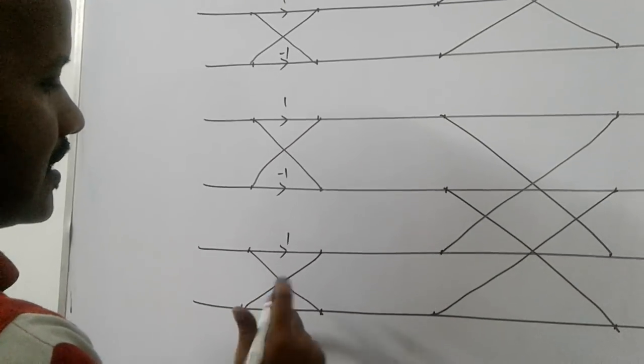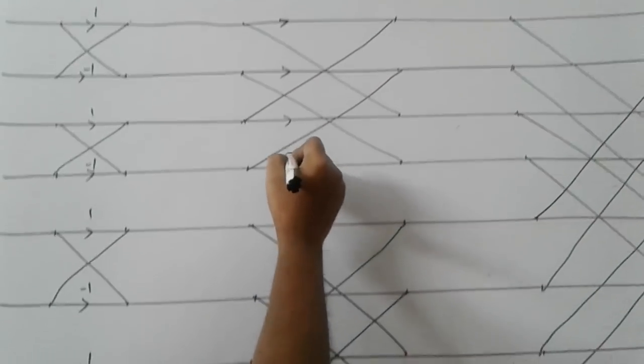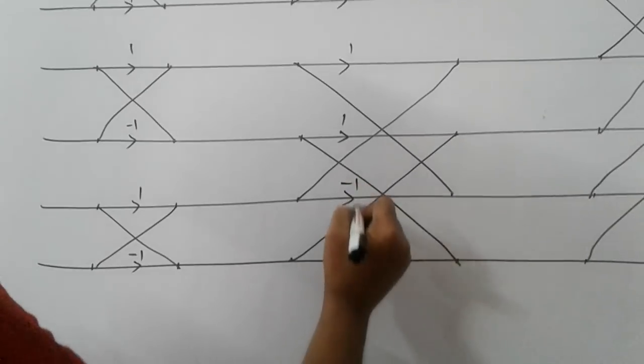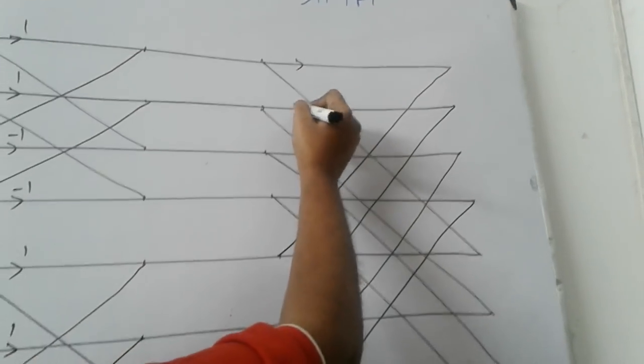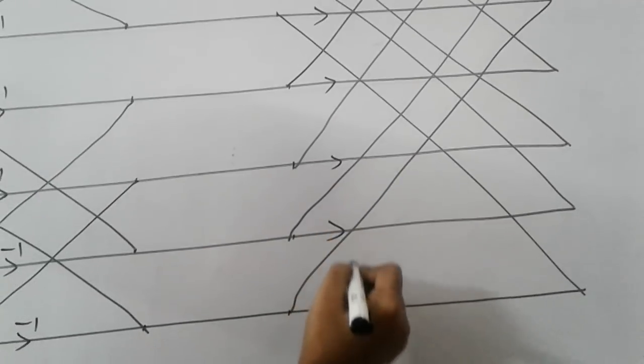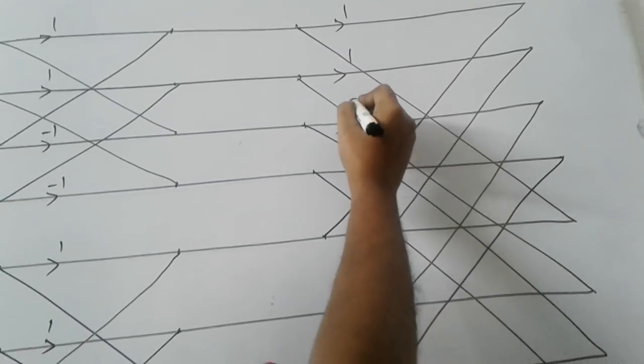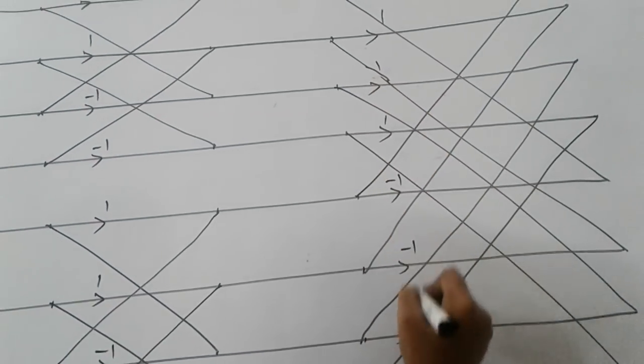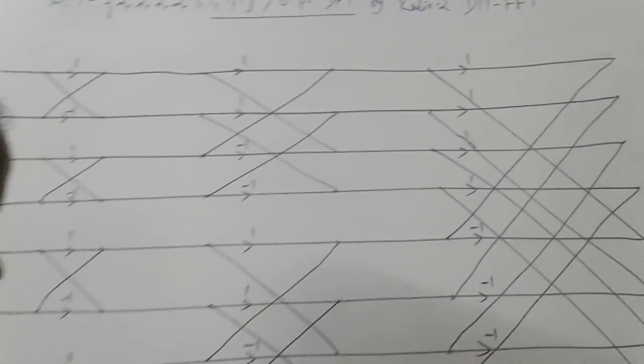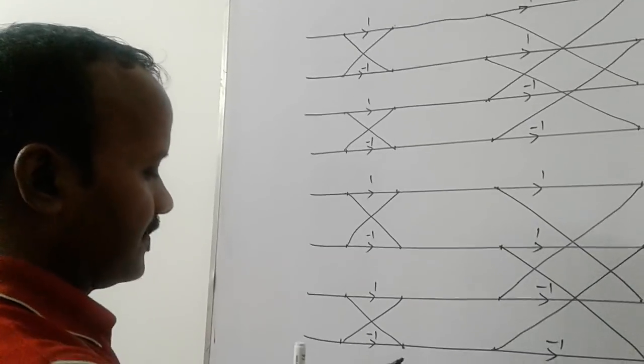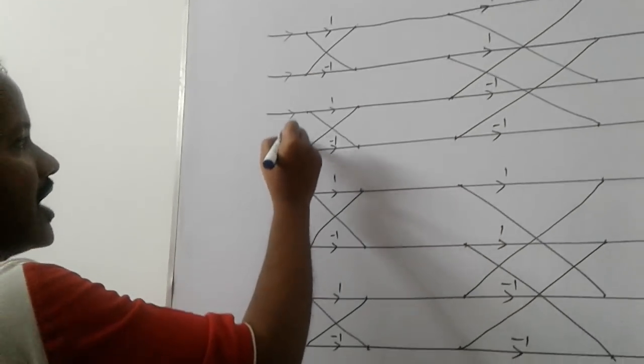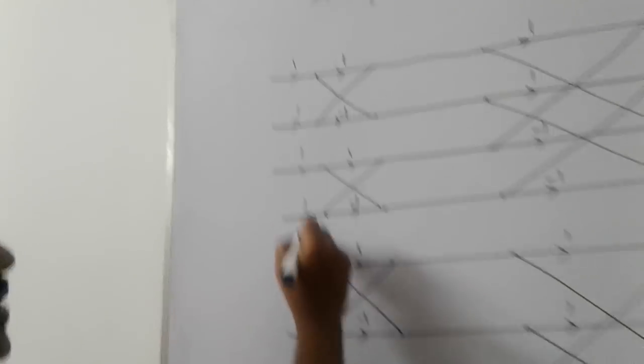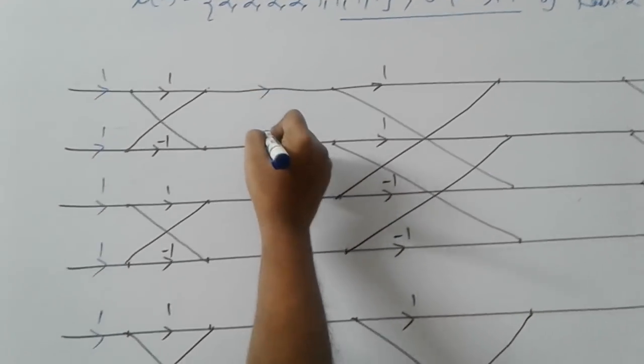Now after drawing these lines, we have to write the phase factor and the multiplication factor. First we will write the phase factor. First put the arrow marks. 1 minus 1, 1 minus 1. Then here this is 4 point DFT. 2 ones, 2 minus ones, 2 ones, 2 minus ones.